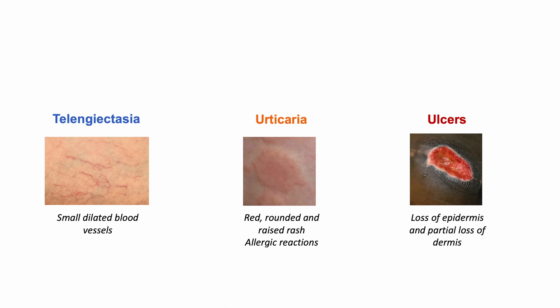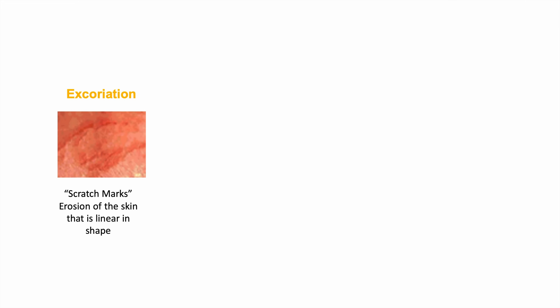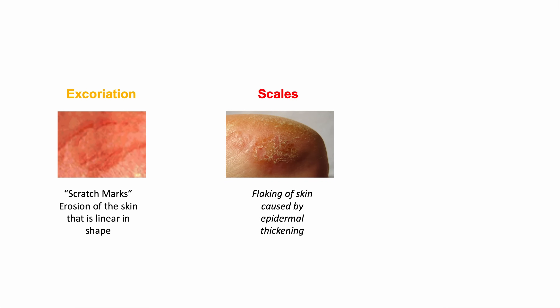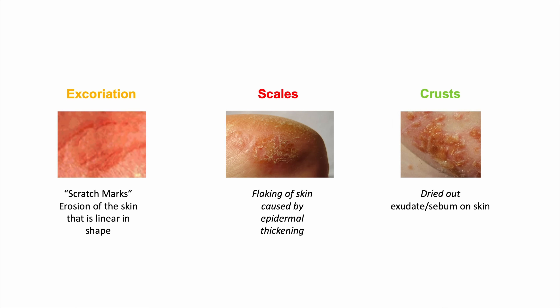An ulcer is a larger skin lesion that involves the full epidermis and part of the underlying dermis. An erosion only involves part of the epidermis, not the dermis. Excoriations are scratch marks — a linear erosion of part of the epidermis. Scales are flaking of the skin caused by epidermal thickening. A crust is dried-out exudate such as pus or sebum, seen for example in impetigo as golden crusts.